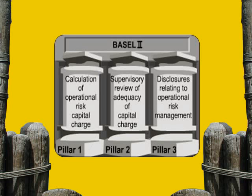Pillar number one: the calculation of operational risk capital charge. In this pillar, Basel is setting out the principle, procedure, and calculation method that the bank should take in order to maintain adequate capital to face its operational risk and the losses resulting from it.